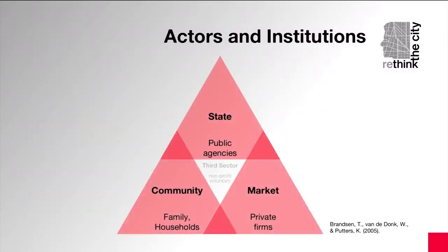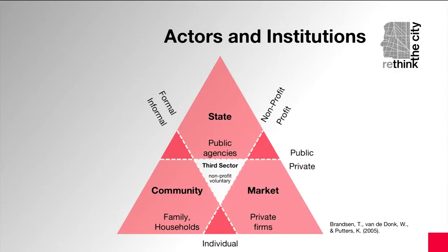Housing policies require the participation of different actors and institutions. We can identify four types of actors or institutions that play important roles in the production and management of housing in most countries. This triangle diagram shows at the top the state or government actors, on the right the market or commercial actors, and on the left community actors. Community actors include cooperatives and other self-organized groups of households that work together to provide housing for and by themselves.